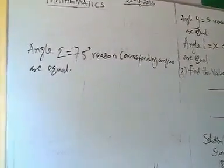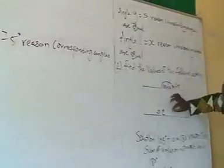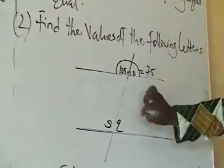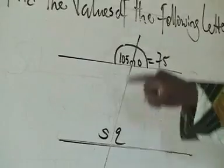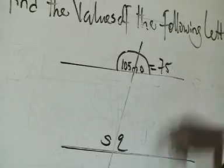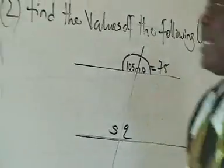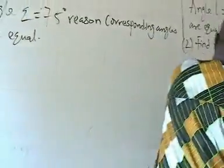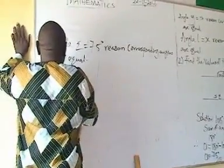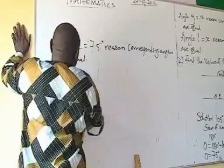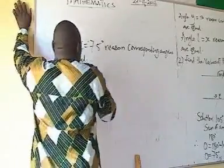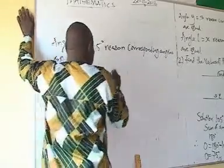This angle must jump a line before picking another angle. It has jumped a line — this is the partner. Q is 75 degrees. Angle S — what's the value? 105 degrees. Corresponding angles are equal.